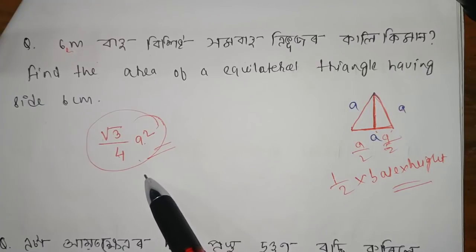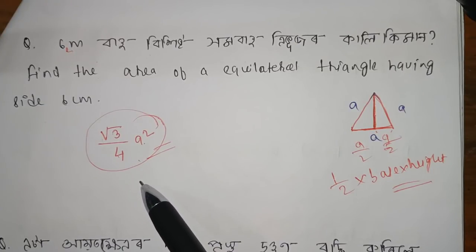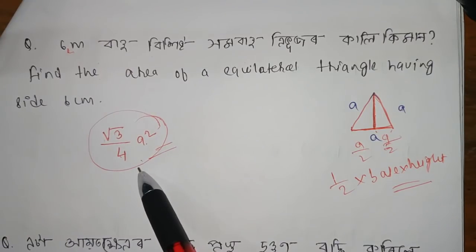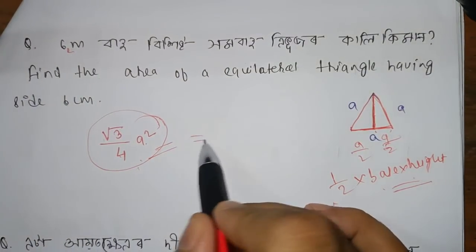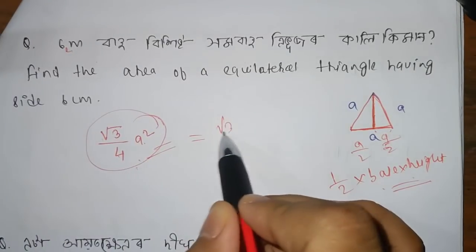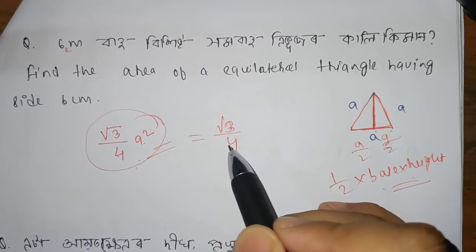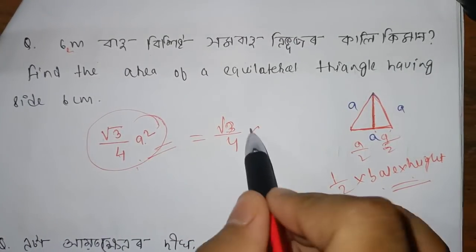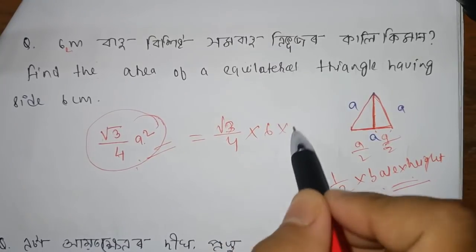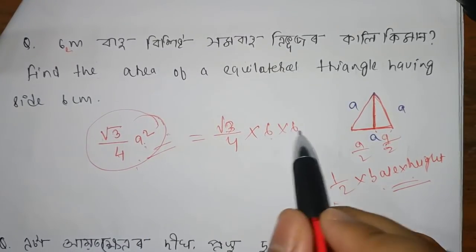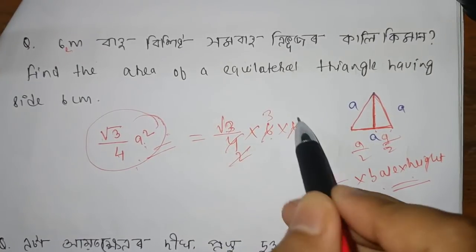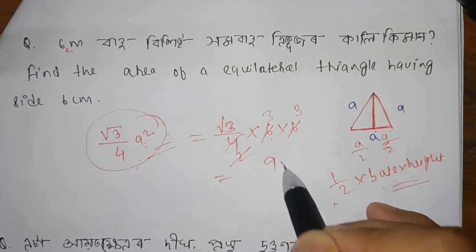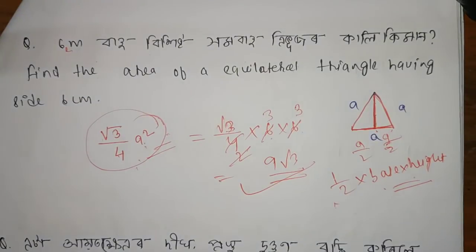We should apply the formula to this. Half into base into height — apply the area formula to 6 cm. A squared is 6 into 6 equals 36. Then we apply root 3 by 4, and the area is 9 root 3.